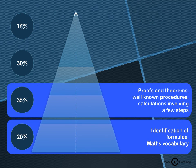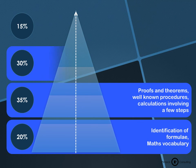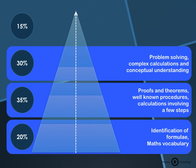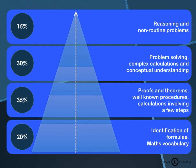35% should cover proofs and theorems, well-known procedures, and calculations involving a few steps; 30% on problem solving and conceptual understanding; and 15% on reasoning and non-routine problems—things learners have never seen before and must reason through.